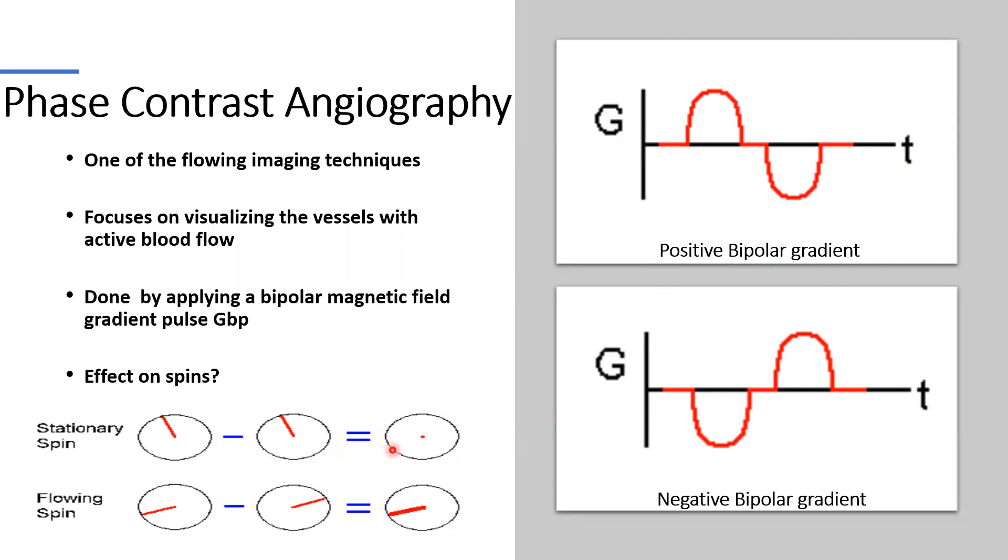As shown here in the figure, the flowing blood will be added and shown in the image. And this is about how Phase Contrast Angiography is done.